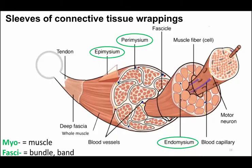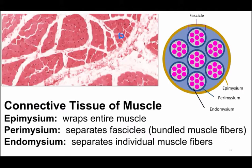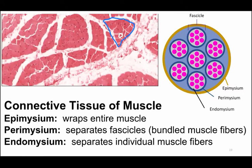Looking at a flat cross-section, we can see individual muscle fibers. In addition to the cell membrane, you've got the endomysium, and then a fascicle is marked off with the perimysium. The epimysium is the huge outer bundle wrapping the whole muscle. Both images show the muscle in cross-section.